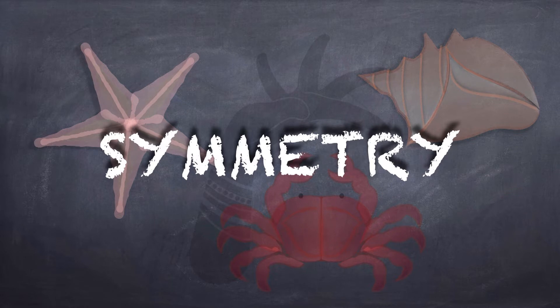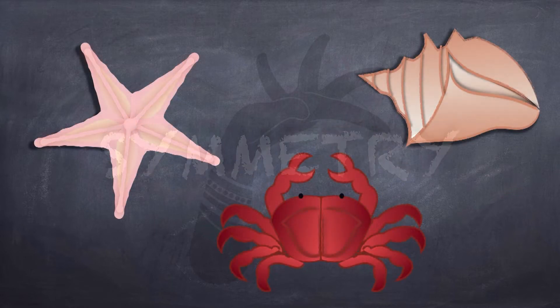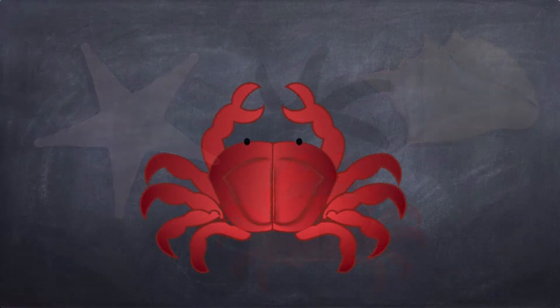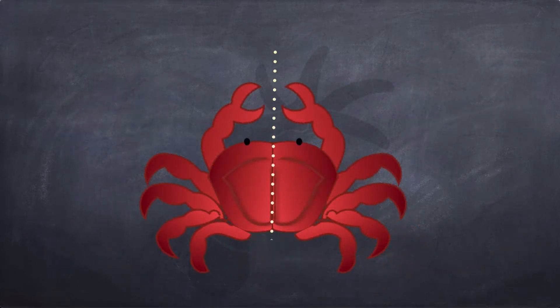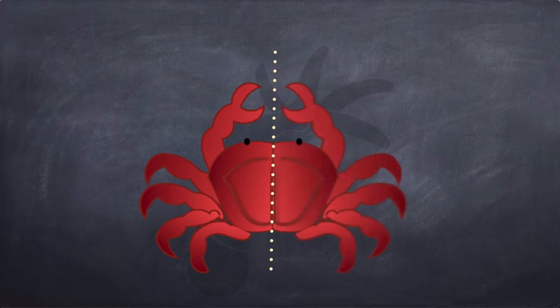Here are some objects from the beach. Which ones are symmetric and which ones aren't? The crab is symmetric because when you draw a line through the middle of it, both sides look exactly the same, just flipped.